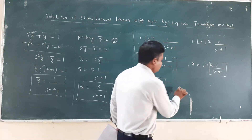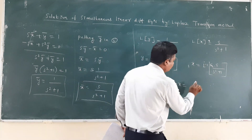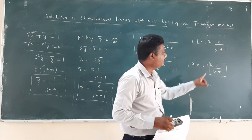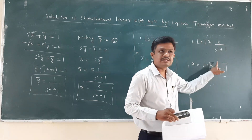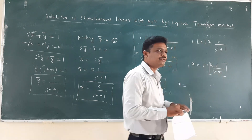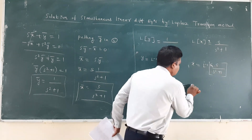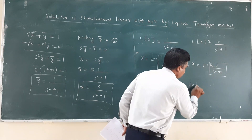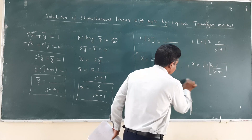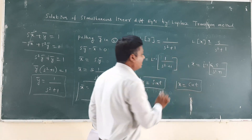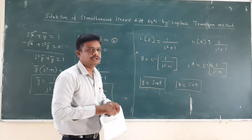So x = L⁻¹{s/(s² + 1)} = cos(t), and y = L⁻¹{1/(s² + 1)} = sin(t). This is the required solution.